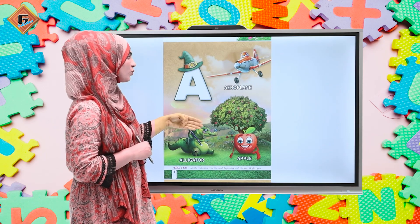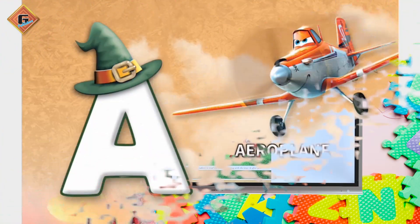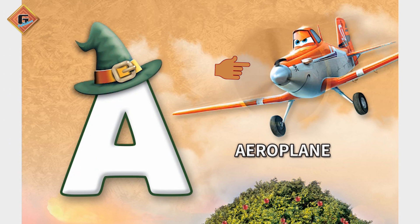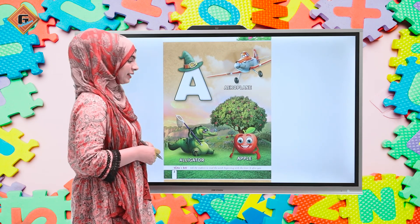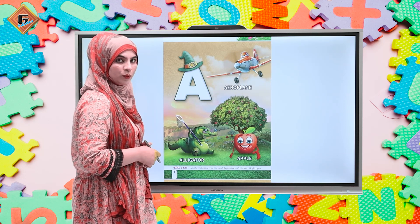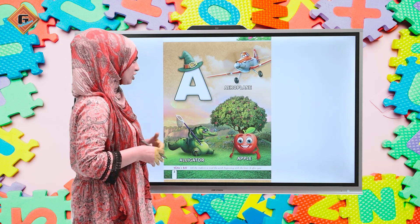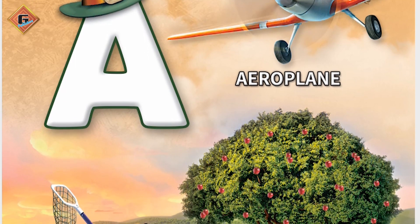लेकिन apple बहुत happy है क्योंकि alligator उसको catch नहीं कर सका। उसके बाद देखें — उपर से एक aeroplane आ रहा है। Aeroplane sky पे है। और आपको पता है कि aeroplane क्यों angry है? वह इसलिए angry है कि alligator अकेले ही सारे apple pick करने की कोशिश कर रहा है और उसको एक भी apple नहीं दे रहा। यह सब words किस sound से start हो रहे हैं? 'A' से — alligator, apple, aeroplane, angry।